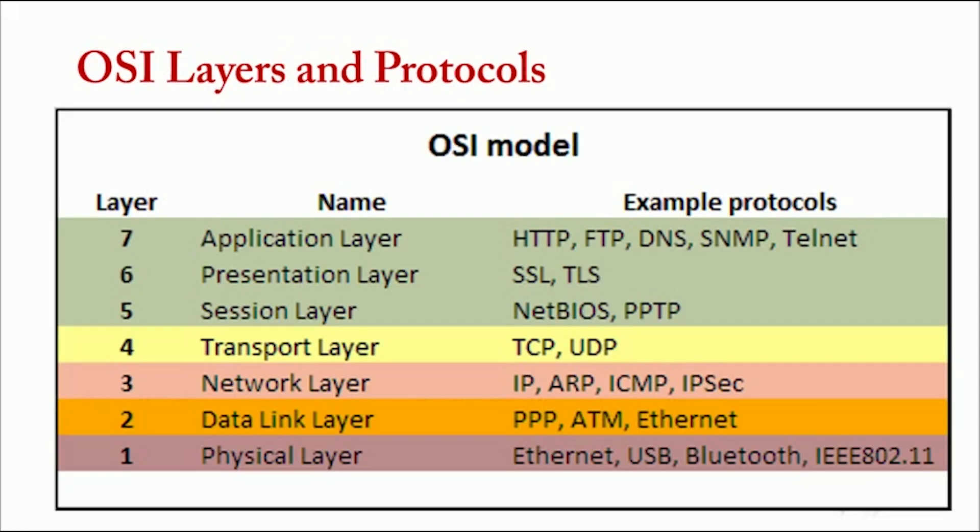Now, the following table shows which protocols reside on which layer of the OSI model. For example, application layer uses HTTP, FTP, DNS, SNMP, and Telnet protocol. Presentation layer uses SSL and TLS protocol. Session layer uses NetBIOS and PPTP. Transport layer uses TCP and UDP. Network layer uses IP, ARP, ICMP, and IPSEC protocol. Data link layer uses PPP, ATM, Ethernet. Physical layer uses Ethernet, USB, Bluetooth, and IEEE 802.11 protocol.